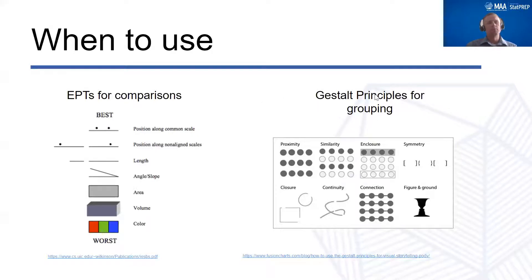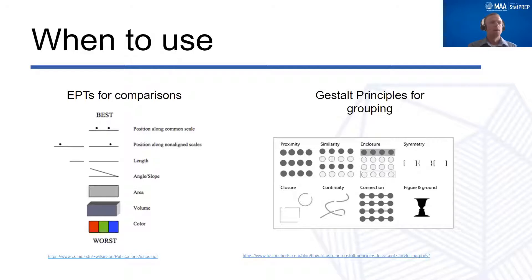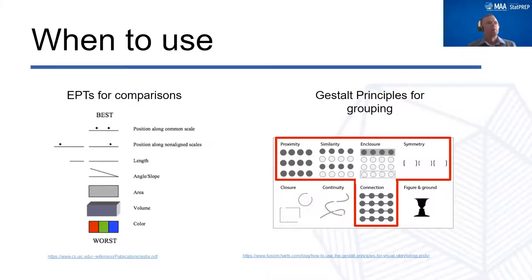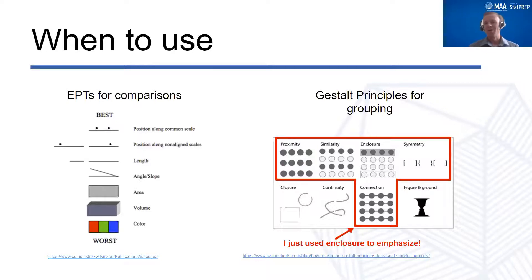Gestalt principles are typically used for grouping. Points or aspects of a visualization with the same color or shape get grouped together automatically in our minds. We connect lines for different groups to tell a story. The five Gestalt principles we use most often are proximity, similarity, enclosure, symmetry, and connection. For example, I just used enclosure to highlight and group those five principles together. Once you start thinking about these things, you start to see them everywhere.